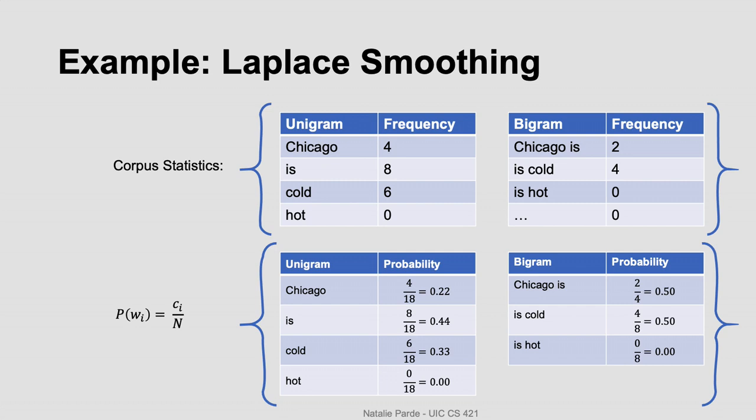We can also compute our bigram probabilities the same way. Now with unigrams, we were considering all possible unigrams in the denominator because a unigram model considers words independent of any history. However, a bigram model considers the most recent word as the history. This means that our value n in the denominator when we compute bigram probabilities is going to be the unigram frequency for the first word in the bigram. For example, the probability for the bigram Chicago is is going to be computed by finding the frequency of that bigram, so that's a value of two, and dividing it by the frequency with which the unigram Chicago occurs in the corpus, which is four.